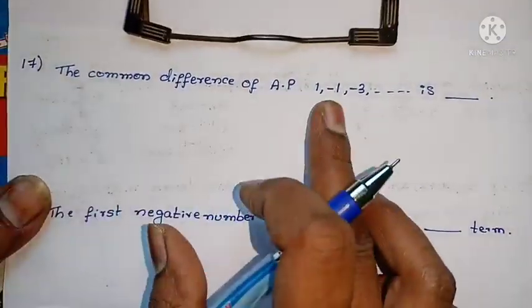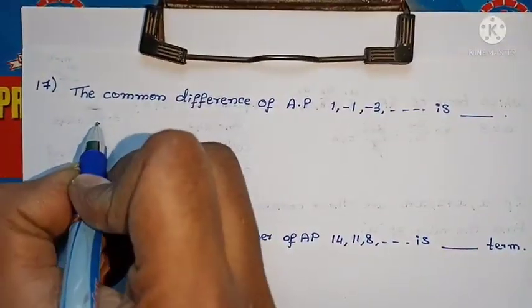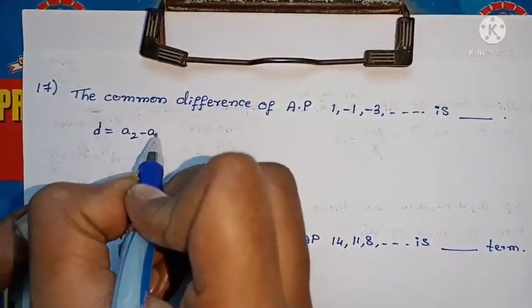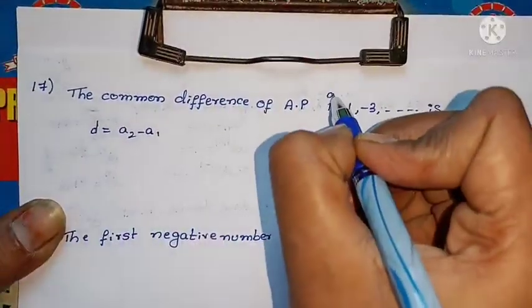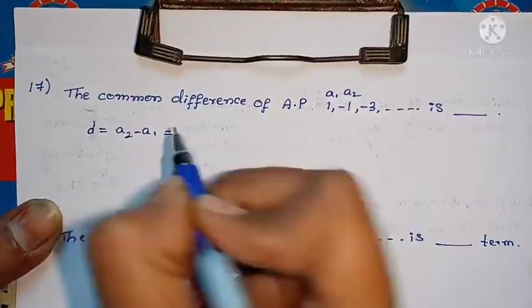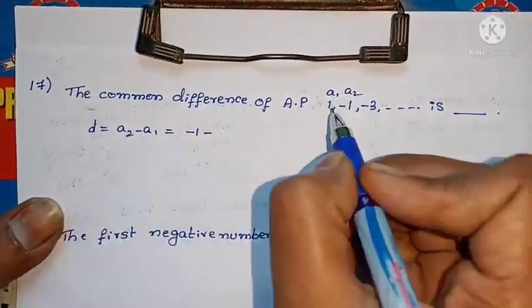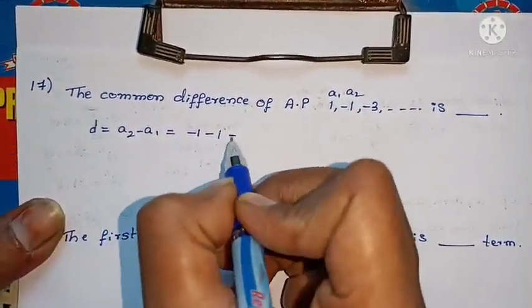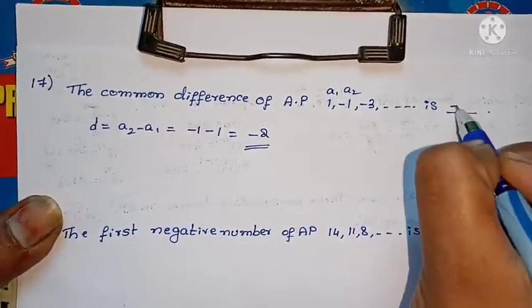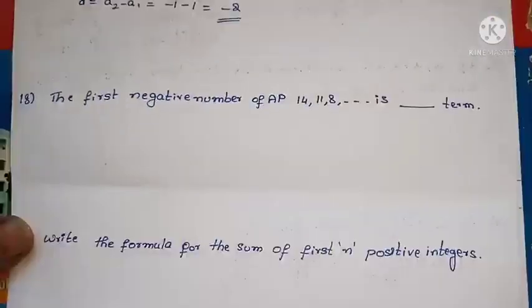The common difference of an AP: common difference D equals A2 minus A1. That is A2 minus A1, which gives the answer.